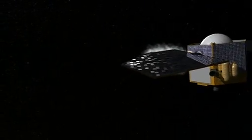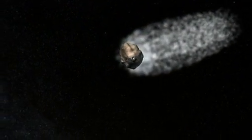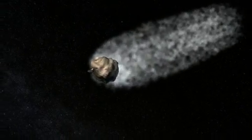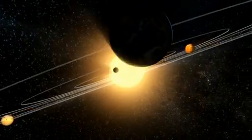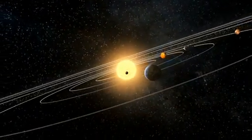The Comet Nucleus Sample Return mission will collect subsurface samples from a comet and return them to Earth. Comets and asteroids are leftover remnants from the early solar system, and by studying samples from these objects, we can learn more about the formation of our solar system and may find clues to the origin of life on Earth.